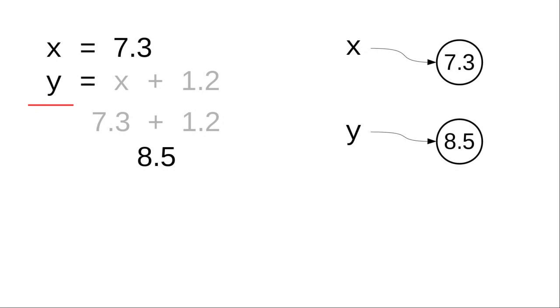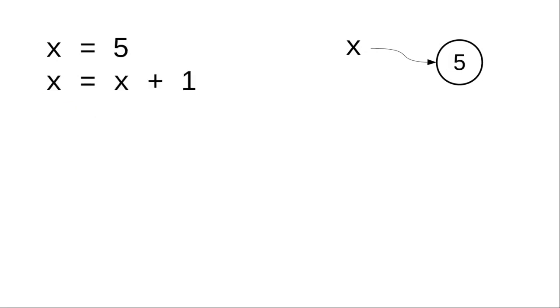To drive home the point that the variables in Python don't work like the ones in algebra, let's look at this set of two statements. At the end of the first statement, x refers to 5. That's what the first statement says. But let's look at that second statement. In algebra, that doesn't make any sense at all. 5 doesn't equal 6. But again, this isn't algebra.